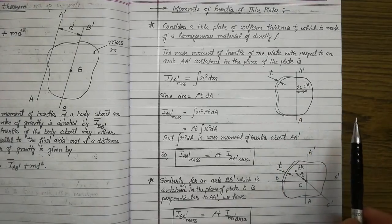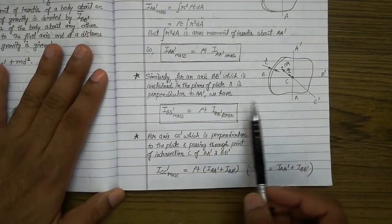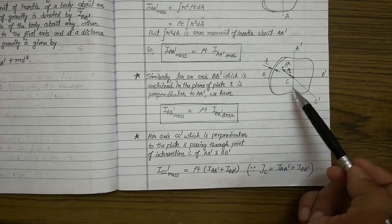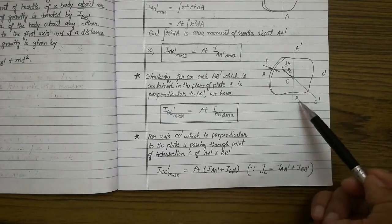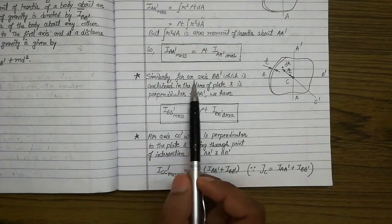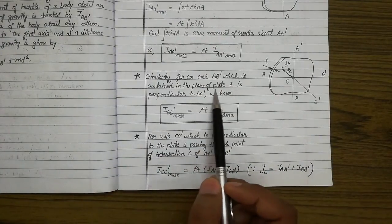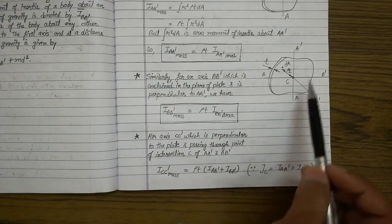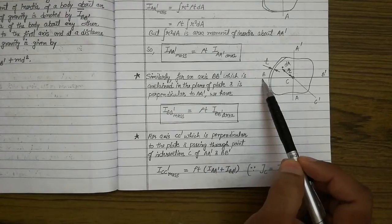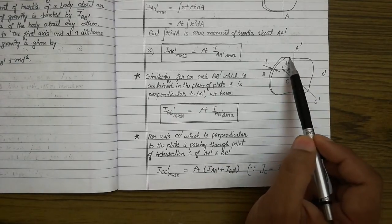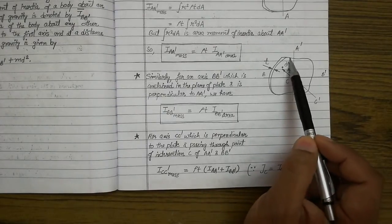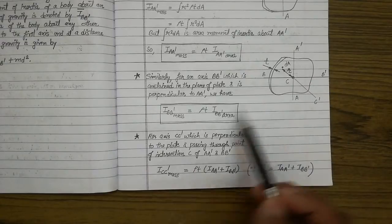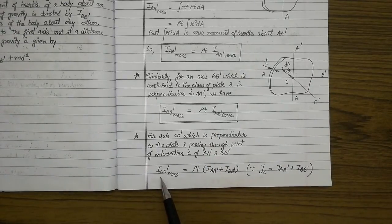Similarly, this can be done for other axes as well. Two more axes are shown: one is BB' which is the horizontal axis, and another axis CC' which is perpendicular to both AA' and BB'. For axis BB', which is contained in the plane of the plate and is perpendicular to AA' — if you know the area moment of inertia of this plate about BB' and you want the mass moment of inertia about the same axis, just multiply the area moment of inertia by rho times t.